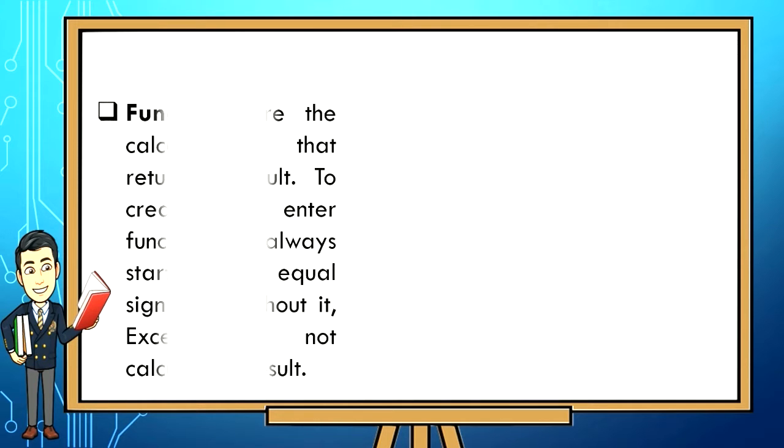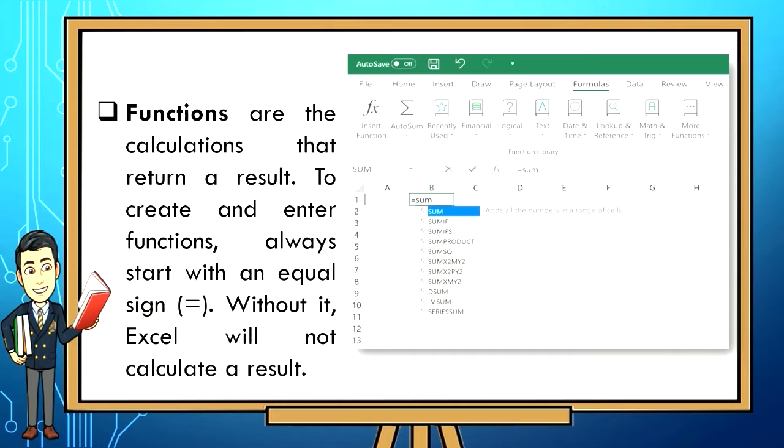Functions are the calculations that return a result. To create and enter functions, always start with an equal sign. Without it, Excel will not calculate a result.